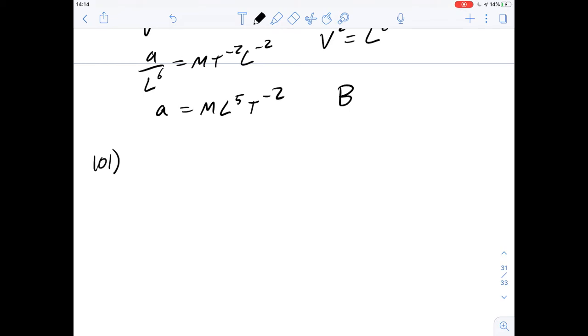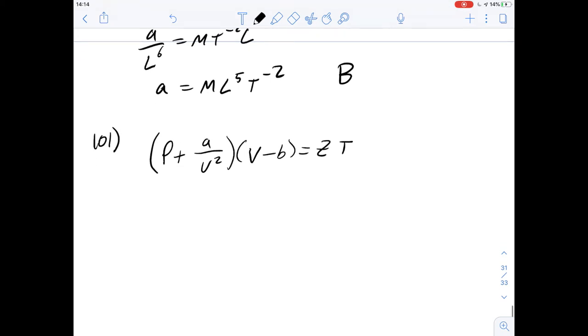Okay. Question 101. The value of the constant Z could be expressed in terms of which unit? Okay. So let's draw out the equation again. We've got P plus A over V squared multiplied by V minus B, and that equals ZT. And this is T for temperature, not time. Okay. So the units have to be the same on both sides. I think that's the first thing we should say.